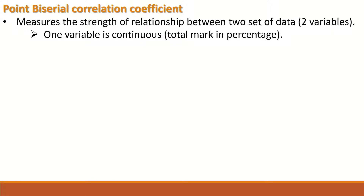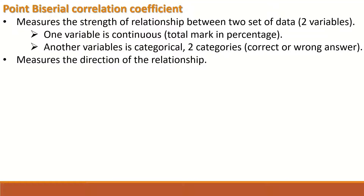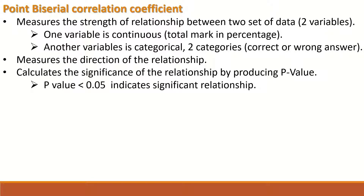One variable is continuous, such as the total mark in percentage from 0 to 100, and the other variable is categorical with two categories: correct or wrong answer. The point biserial correlation coefficient measures the direction of the relationship and calculates the significance of the relationship by producing a p-value. A p-value less than 0.05 indicates a significant relationship.